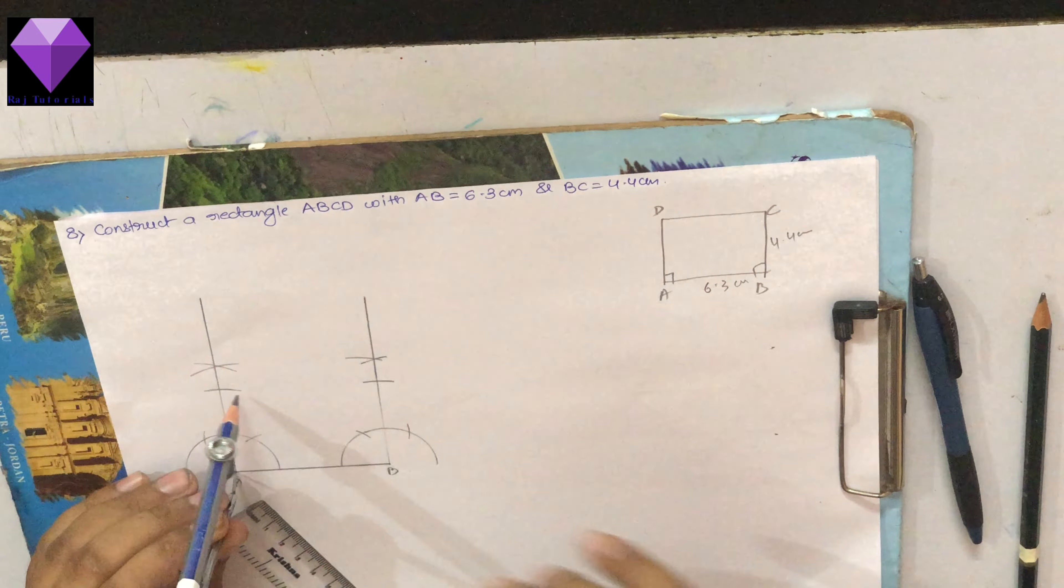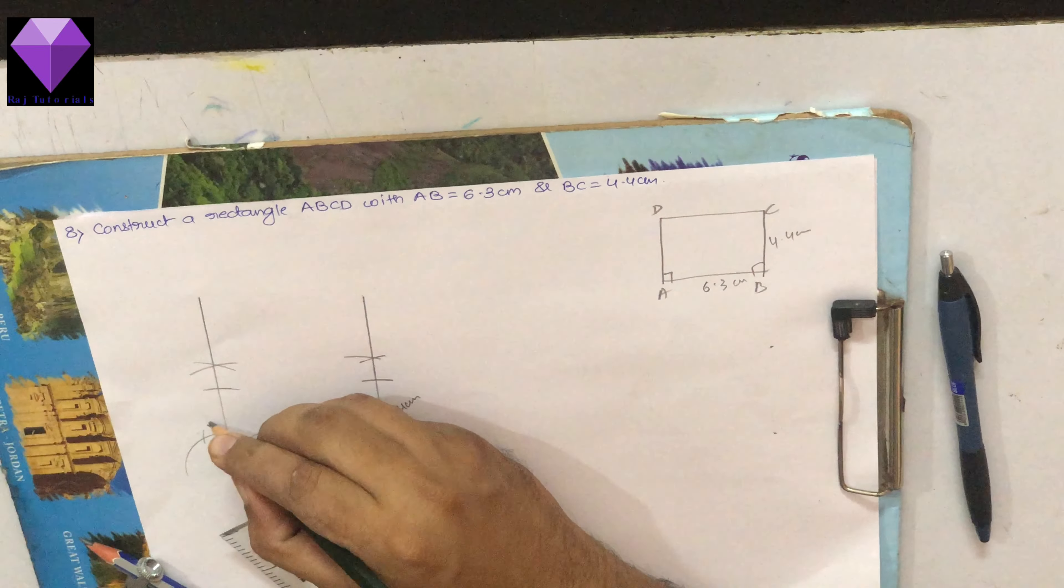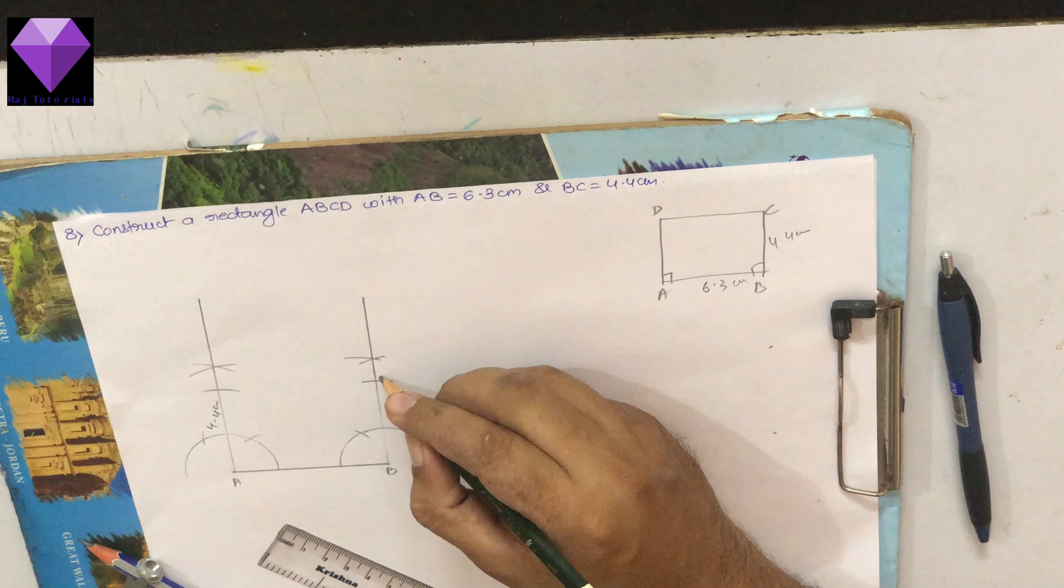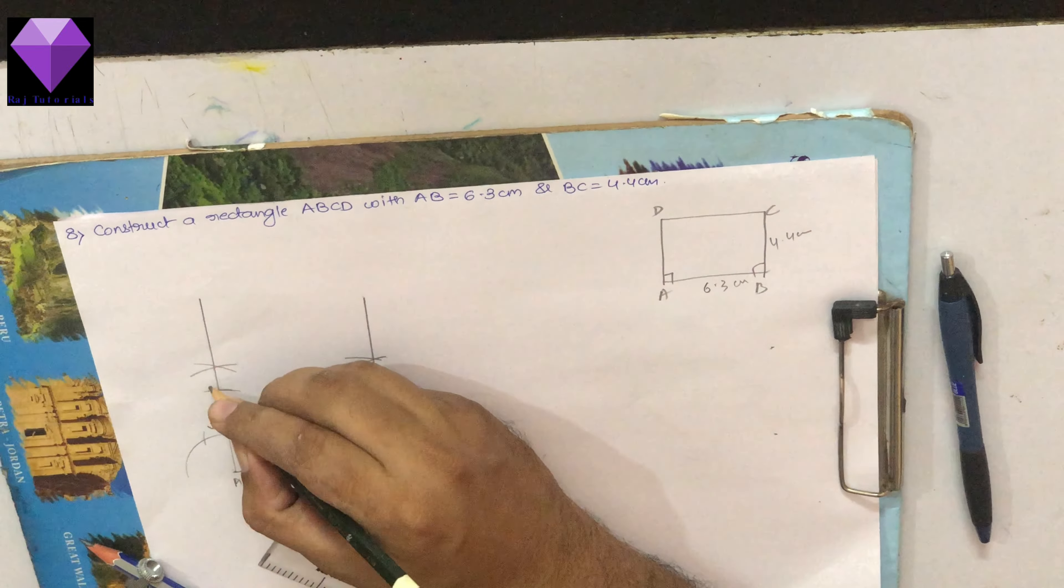Because we know that opposite sides of rectangle are equal, so this both are 4.4 cm.